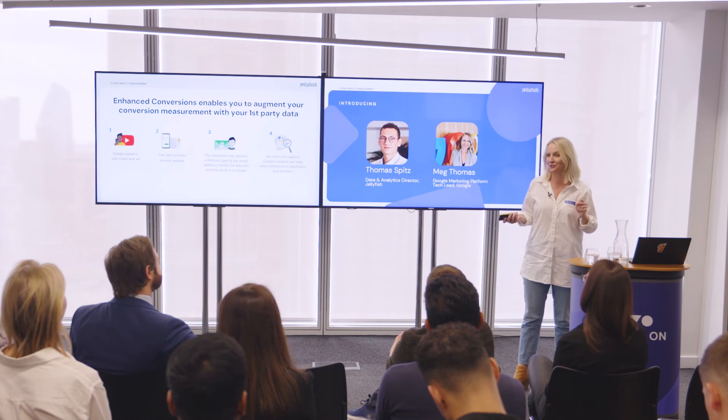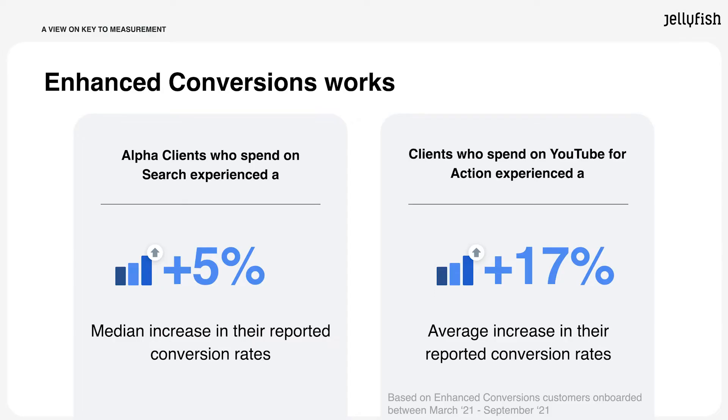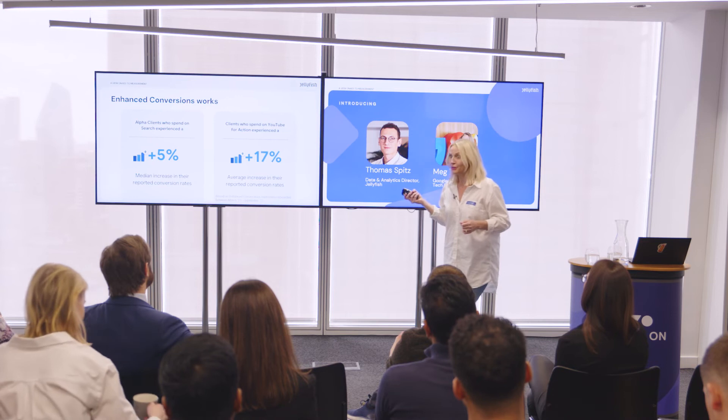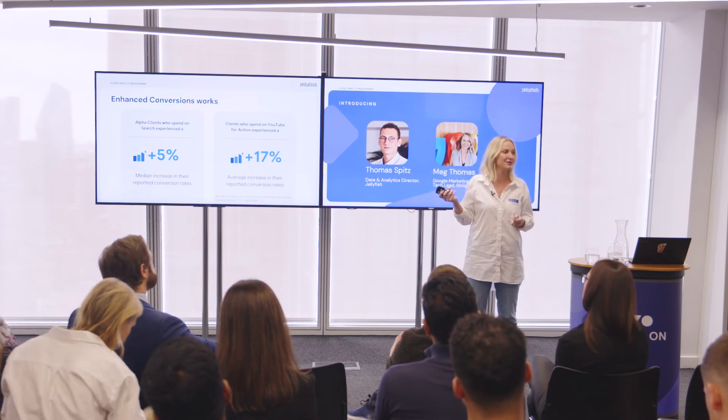It's one of the quickest wins our customers can implement today. If you're going to write down one action item from my section, it's to speak to your Jellyfish account director about enhanced conversions and how to get started. You can also go to support.google.com and search for enhanced conversions. We know it works: we see about a 5% median conversion rate lift on search, which makes sense as it's mostly click-based. On YouTube, for video action campaigns, we see about a 17% conversion lift on average — which is pretty powerful. Action one: talk to your Jellyfish account director about enhanced conversions.